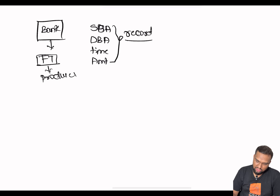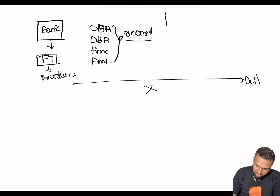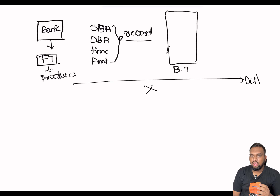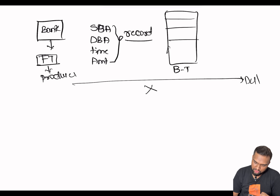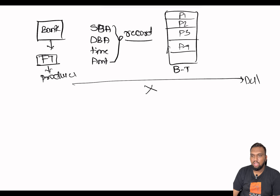These messages are not directly sent to the destination. Instead, they are directed to a Kafka topic — let's call it 'bank transfer'. Think of a topic as a category where related messages are grouped together. Within this topic we have multiple partitions — P1, P2, P3, P4 and so on — each partition handling a subset of messages and allowing for parallel processing.